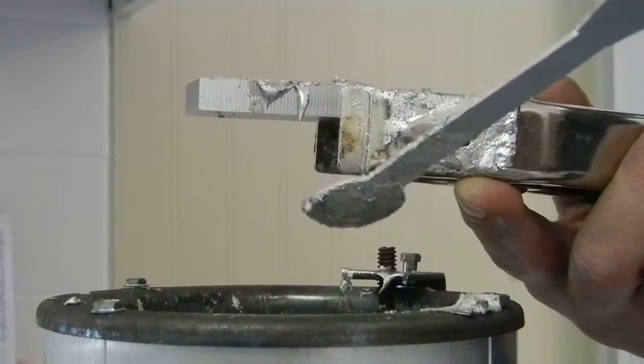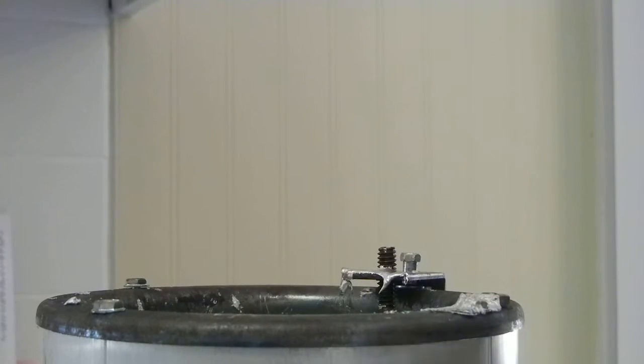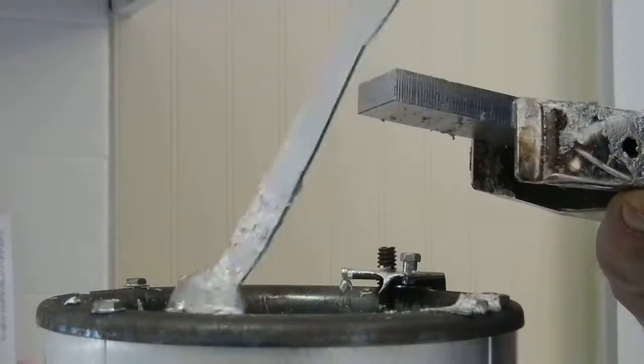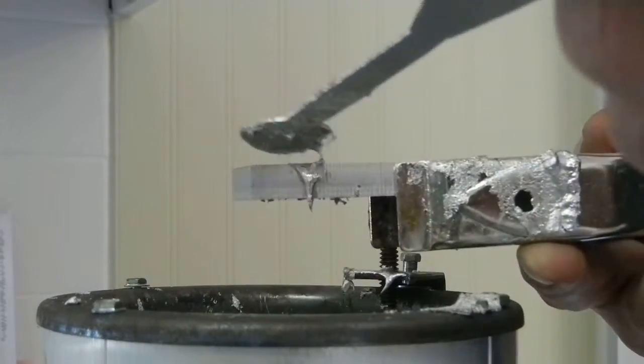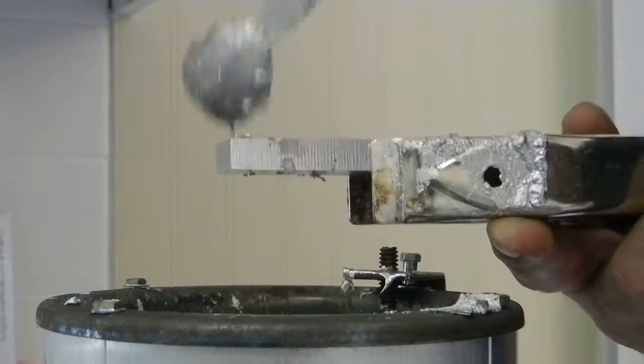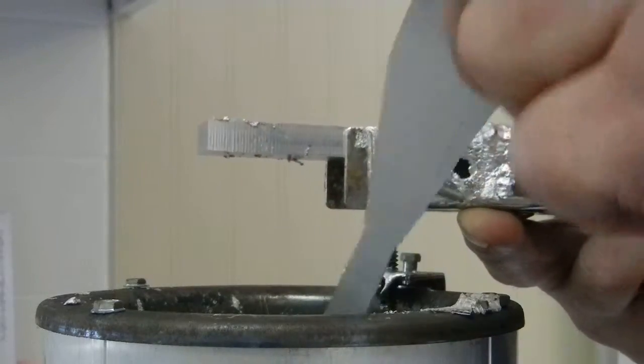Now this mold is kind of tiny so it's going to get hot real fast. And after probably 15-20 blanks cast, you're going to want to cool it back off. Otherwise it just takes way too long for the blanks to freeze up.